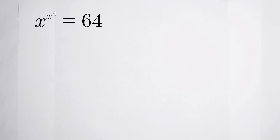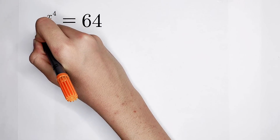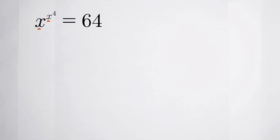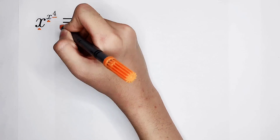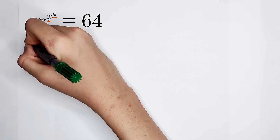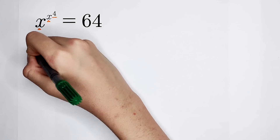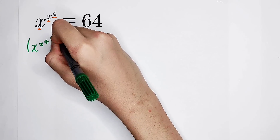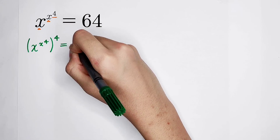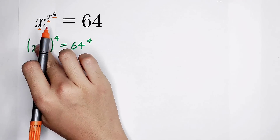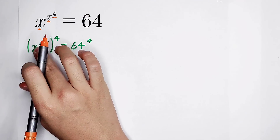For dealing with this question, we can do this. Since here appear two x's and only one 4 on the exponent, I'm going to get a fourth power on both sides. So x to the power of x to the power of 4, all to the power of 4, equals 64 to the power of 4. There are two x's and two 4's, so each x has a 4.